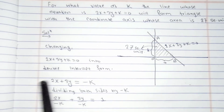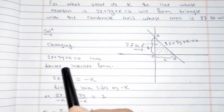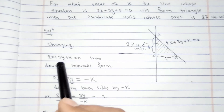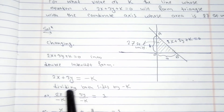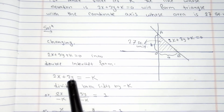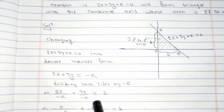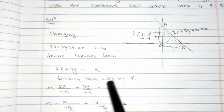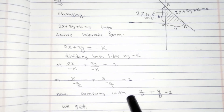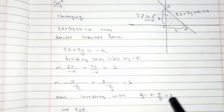To find a and b, firstly we convert this equation into the double intercept form, because the x-intercept and y-intercept are given by the double intercept form. To convert into the double intercept form, we transpose k to the other side and divide both sides by k so that we get 1 here, allowing us to compare it with the double intercept form.